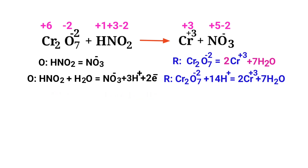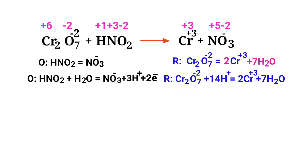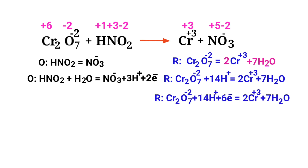Now equal the addition of charges in the reduction half reaction. Both sides are not equal, so add 6 electrons to the left side to make it equal to plus 6. Now the addition of charges are equaled in the reduction half reaction.